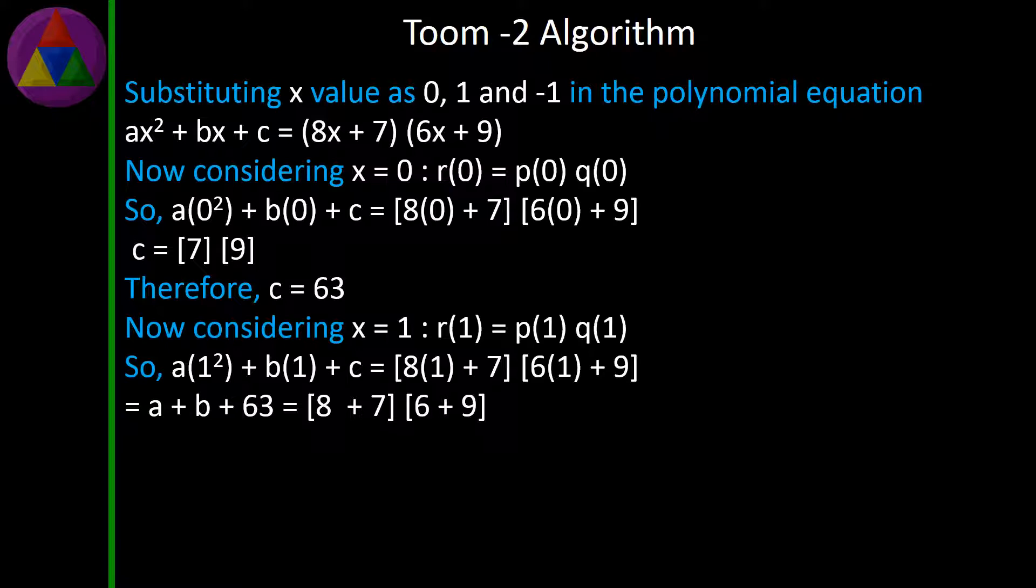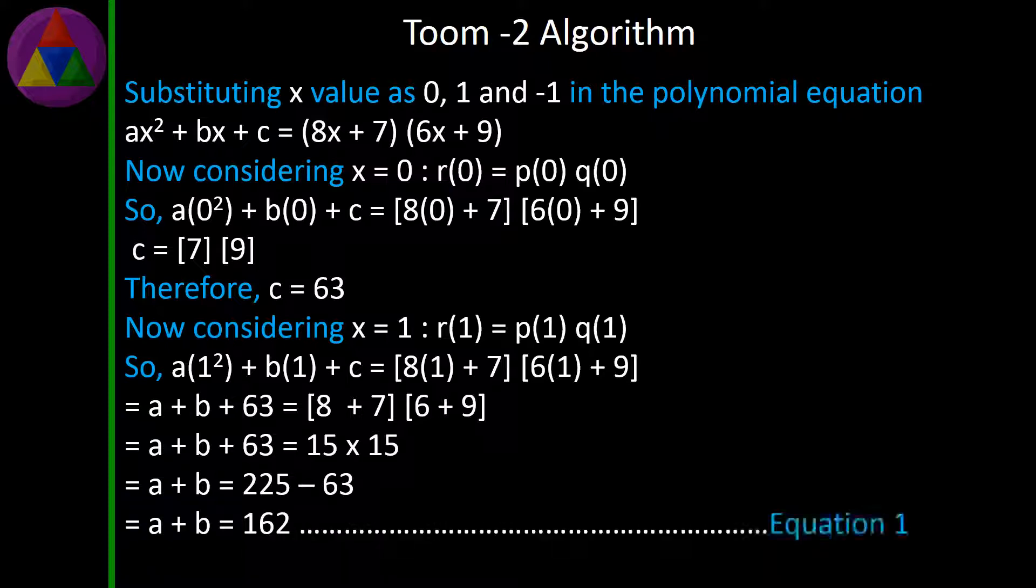Equal to a + b + 63 = (8 + 7)(6 + 9). Equal to a + b + 63 = 15 × 15. Equal to a + b = 225 - 63. Equal to a + b = 162. Equation 1.